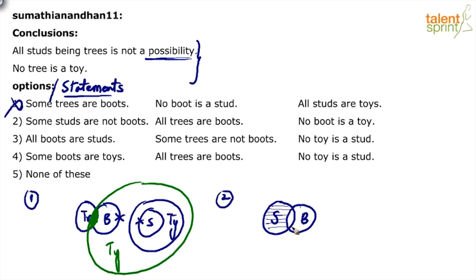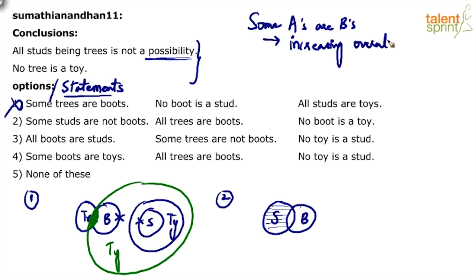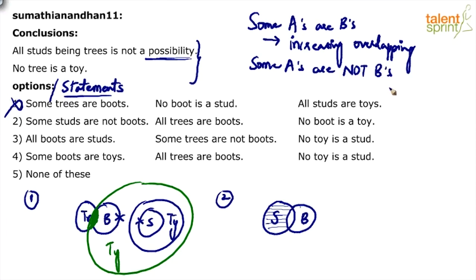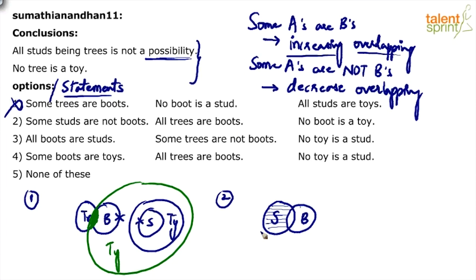When drawing possible diagrams, you cannot increase the overlapping - you have to reduce it. For 'some A's are B's', you can increase the overlapping in possible diagrams. But for 'some A's are not B's', you have to decrease the overlapping. So for this case, I would try to make S and B disjoint - that is the key point.